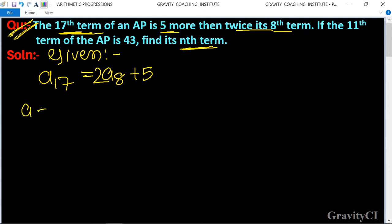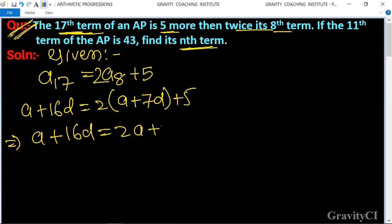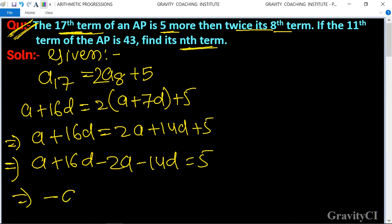We can write a₁₇ as a + 16d, and a₈ as a + 7d plus 5. This implies that a + 16d equals 2a + 14d + 5, which implies that a + 16d minus 2a minus 14d equals 5. So this implies that -a + 2d equals 5. Suppose this equation is the first, and the second part is: